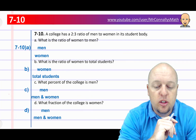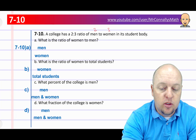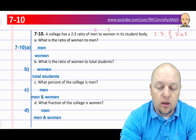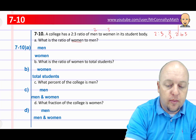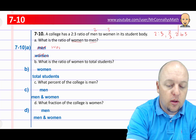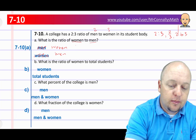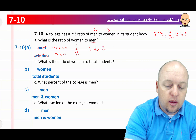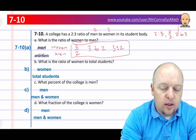Question 7.10: A college has a 2 to 3 ratio of men to women in its student body. What is the ratio of women to men? So if we know it's men to women, men has the 2 and women has the 3. So 2 to 3 is the same as 2 over 3. What is the ratio of women to men? Women would go first and be the numerator. So women is 3 over 2, or we could say 3 to 2.